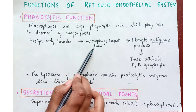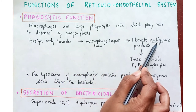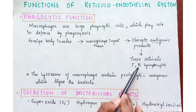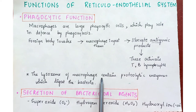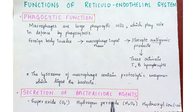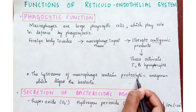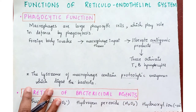The invading body is ingested and antigenic products are liberated, causing activation of lymphocytes. The lysosome, which is present in the macrophage, is a proteolytic enzyme which digests the bacteria.